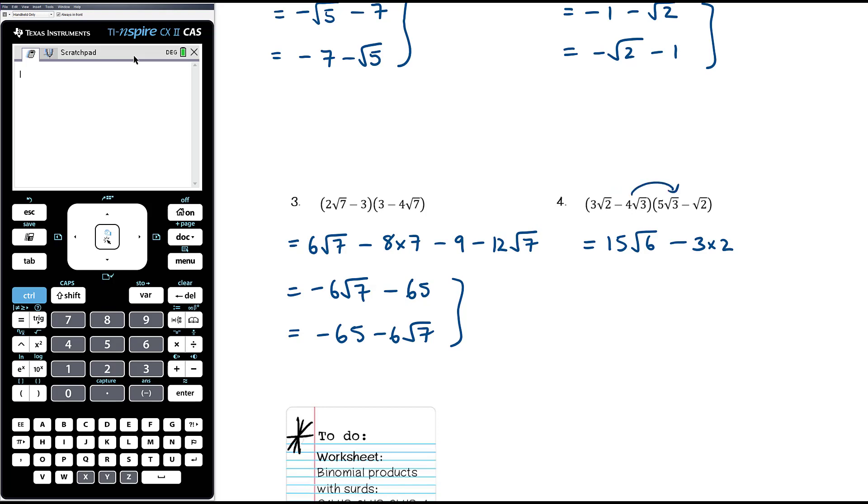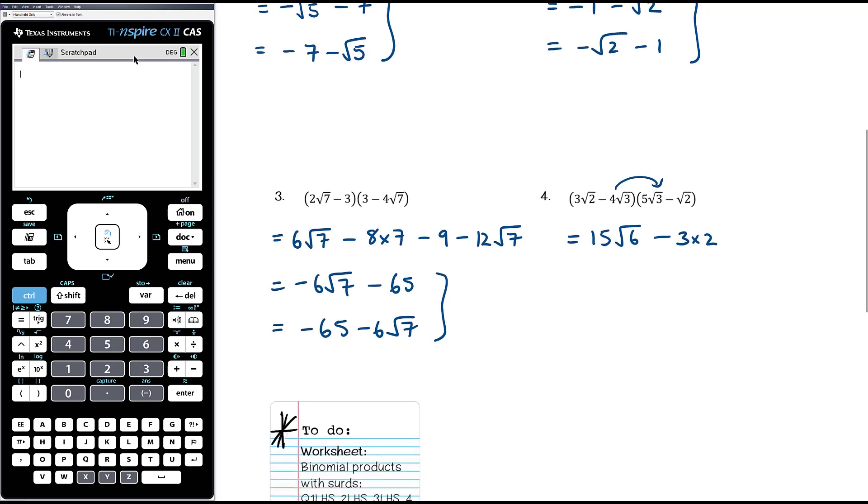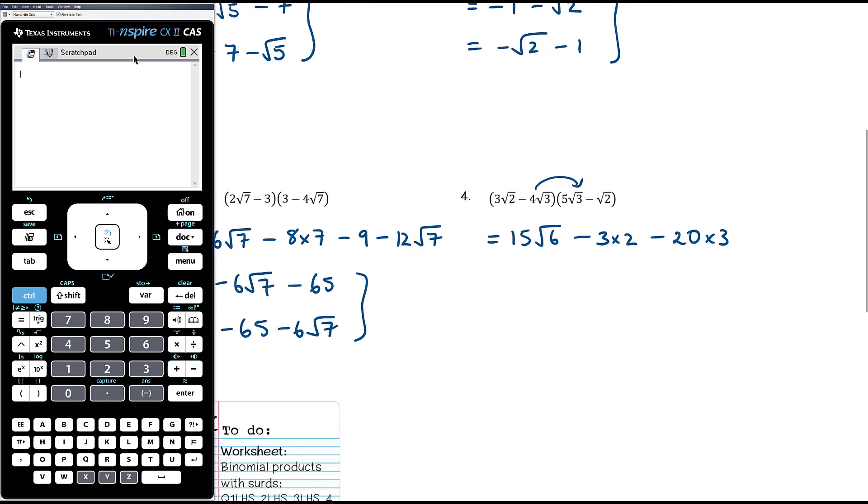And then we've got negative 4 root 3 times 5 root 3, so again, it's negative times positive, so it's going to be negative. 4 times 5 is 20, root 3 times root 3, that's 3. And then finally, we've got negative 4 root 3 times negative root 2, so it's going to be positive. 4 times 1 is 4, root 3 times root 2 is root 6.